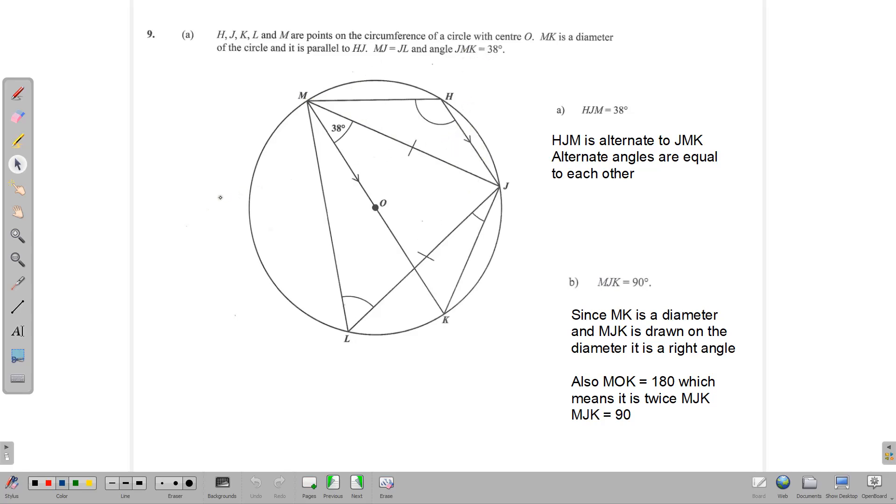That is the information we have, and we are to use that information to calculate the value of HJM. HJM is the angle here, and we can use the fact that the diameter is parallel to this line here. This diameter is parallel to this line, and because it is parallel, we have angles between parallel lines. This angle is alternate to this angle, and because it is alternate, we know that alternate angles are equal to each other. So HJM is equal to 38 degrees by that reason.